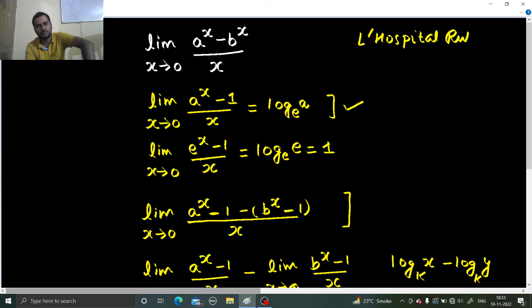So L'Hôpital rule. Because the form is 1 minus 1, a power 0, b power 0, both are 1. So 1 minus 1 divided by 0, so this is a 0 by 0 form. Now, late to realize but it's a 0 by 0 form. You should have done this in the beginning. Always check the form in the beginning only. So now we'll differentiate numerator and denominator separately. So limit x tending to 0.